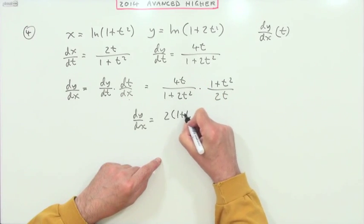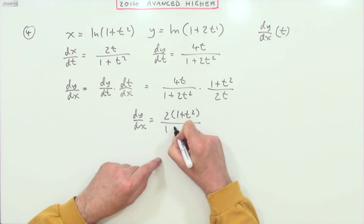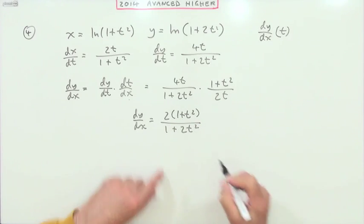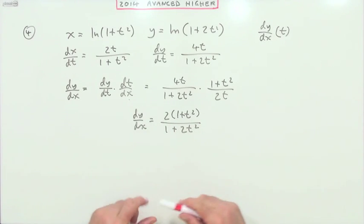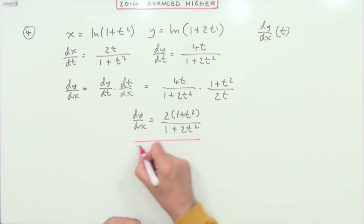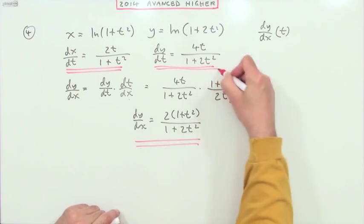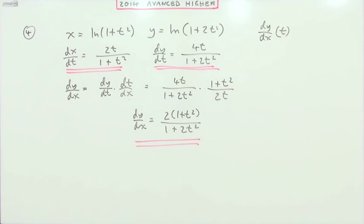That will cancel out, leaving a two on top, two times one plus t squared over one plus 2t squared, and I'll just leave that top part factorized. A fairly quick and painless three marks.